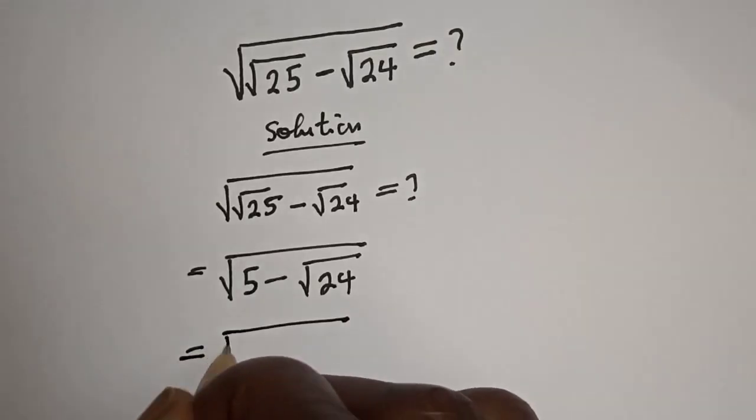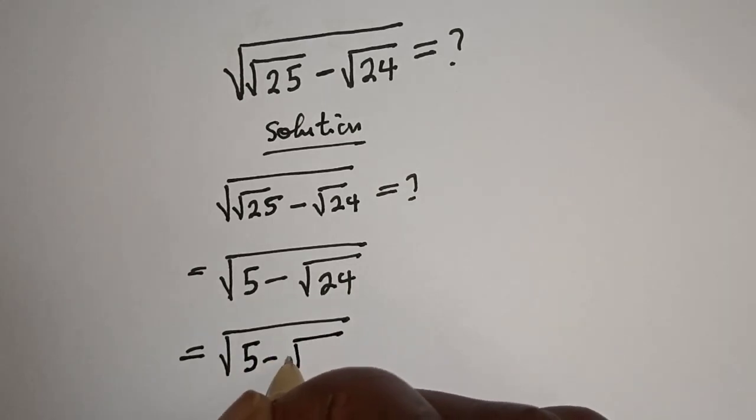Equal to square root of 5 minus square root of, square root of 24 can be written as 4 multiplied by 6.